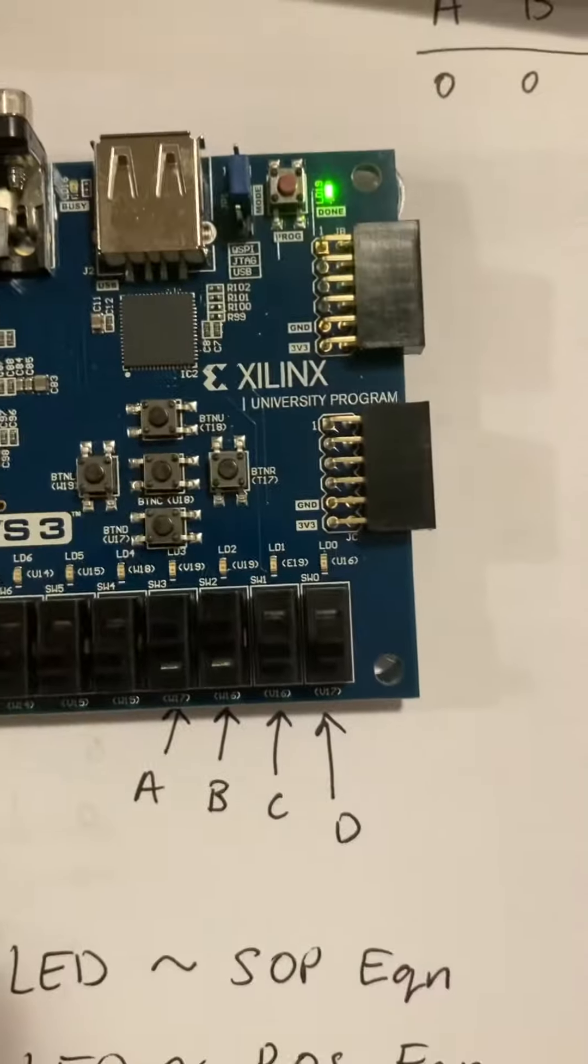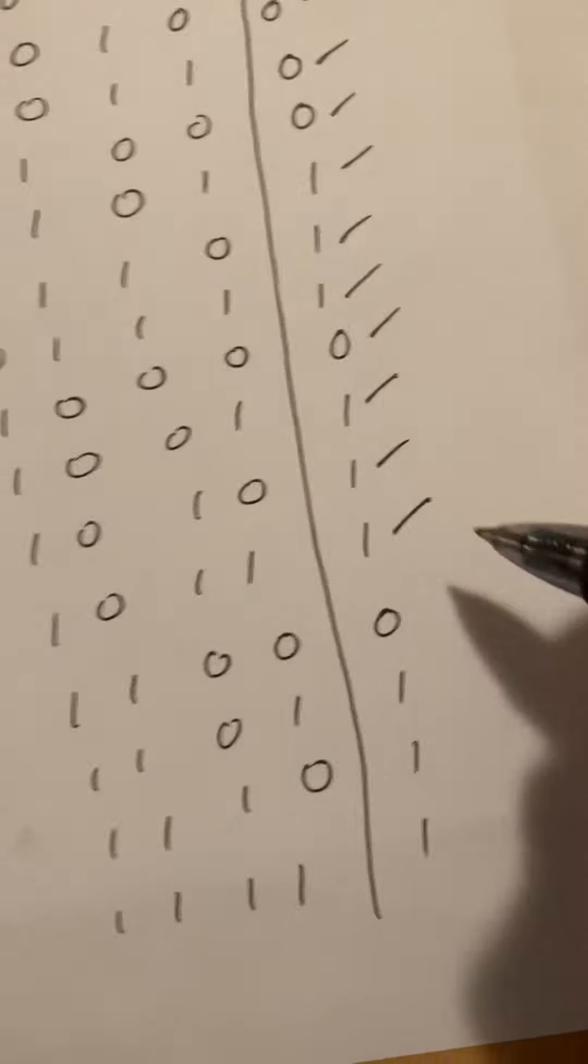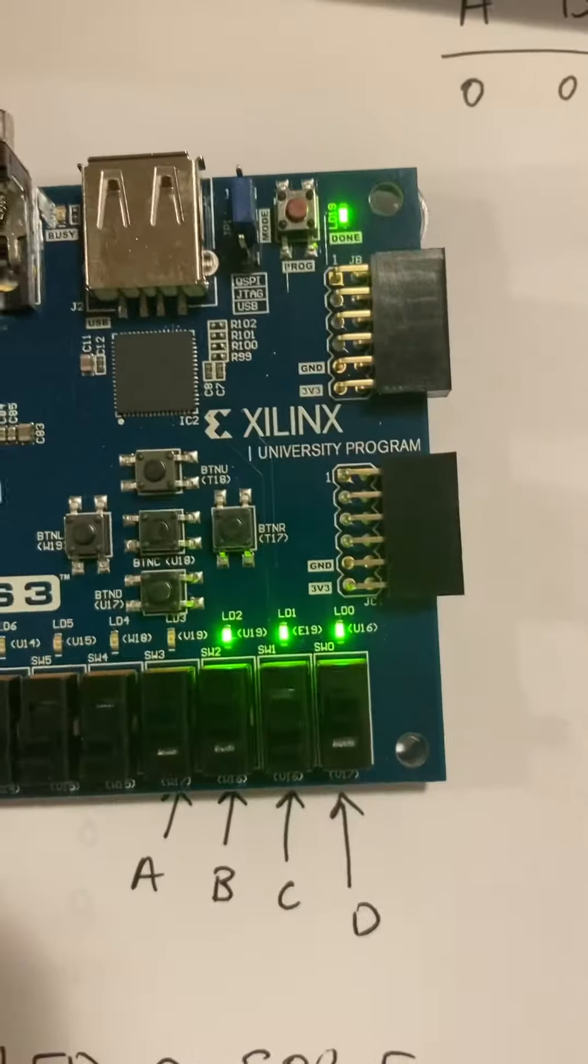Just A and just B. They're off. A, B, and D. The LEDs are on.